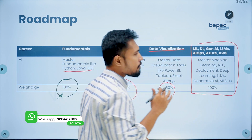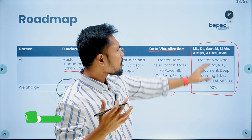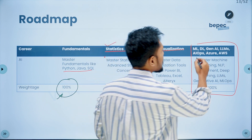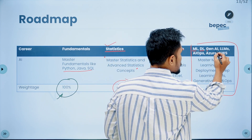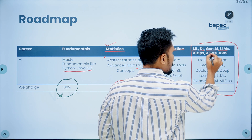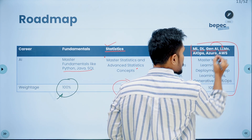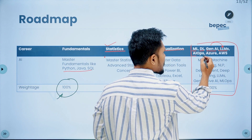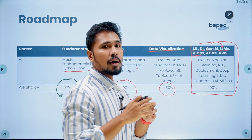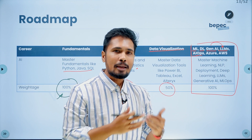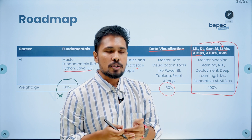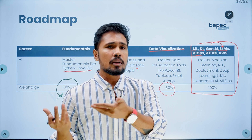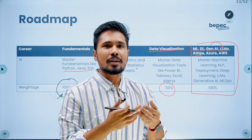Around 90% of interview questions come from machine learning, deep learning, and generative AI divisions. Within generative AI, we have large language models. For projects, if you're applying DevOps-related pipelines to an AI project, we call it AIOps. If you apply those same DevOps principles to machine learning, we call it MLOps.